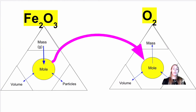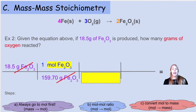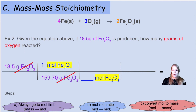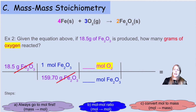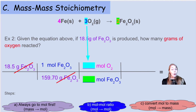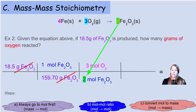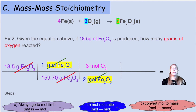Next, we use the mole-to-mole ratio to convert from moles of Fe₂O₃ to moles of oxygen. Moles of Fe₂O₃ goes on the bottom; moles of oxygen goes on top. From the balanced equation, the coefficient in front of oxygen is three — so three moles of oxygen — and the coefficient in front of Fe₂O₃ is two — so two moles of Fe₂O₃. Moles of Fe₂O₃ cancel, and we're left with moles of oxygen.